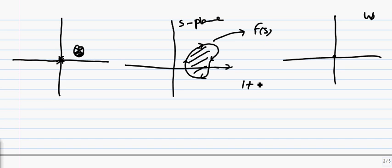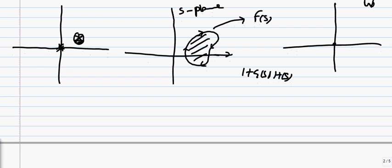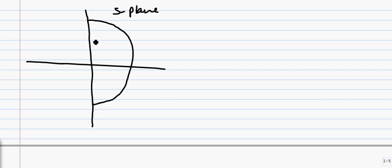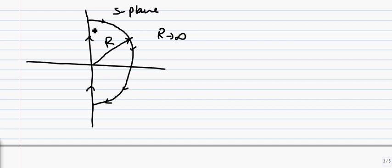If we take F(s) as 1 plus G(s)H(s), and if we want to see all the poles and zeros present in the right half of the s-plane, we can extend the contour to cover the whole positive side of the s-plane. We do this by assuming a semicircle on the s-plane with radius r. If we let r tend to infinity, then this semicircle or closed contour covers the whole positive s-plane, including the j-omega axis.